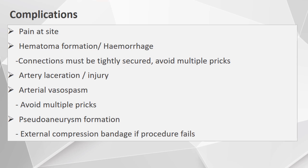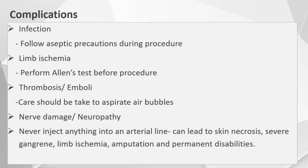Coming to the complications. There can be pain at the site of insertion, hematoma formation, or hemorrhage — to avoid this, ensure connections are tightly secured and avoid multiple puncture attempts. There can also be arterial laceration, injury, or arterial vasospasm, also prevented by avoiding multiple attempts. There can be pseudoaneurysm formation, which can be prevented by applying an external compression bandage if the procedure fails. There can also be infection at the site, requiring all aseptic precautions during the procedure. Limb ischemia can occur, and the Allen's test must be performed before the procedure to check for collateral circulation. There can be thrombosis or emboli, and care must be taken to ensure no air bubbles are present in the line.